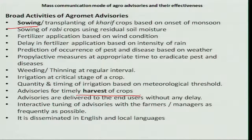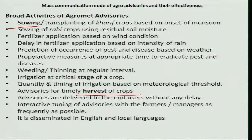They provide all cultural activities related to weather. For example, sowing or transplanting of kharif crops based on the onset of monsoon is provided through agro-meteorological advisories. Sowing of rabi crops using residual soil moisture is also advised. Fertilizer application based on wind conditions is communicated, and delay in fertilizer application based on the intensity of rain is also forecasted. Prediction of occurrence of pests and diseases based on weather is also provided to the farmers to take prophylactic measures.